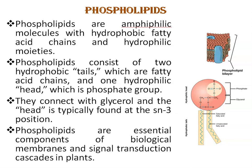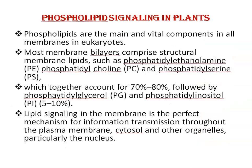Phospholipids are essential components of biological membranes and signal transduction cascades in plants. Phospholipids are the main and vital components in all membranes in eukaryotes. Most membrane bilayers comprise structural membrane lipids — like phosphatidylethanolamine, phosphatidylcholine, and phosphatidylserine — which together account for 70% to 80%, followed by phosphatidylglycerol and phosphatidylinositol at 5 to 10%. Lipid signaling in the membrane is the perfect mechanism for information transmission throughout the plasma membrane, then to the cytosol and other organelles, particularly the nucleus.